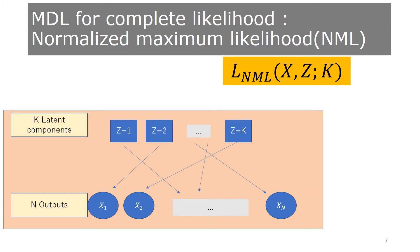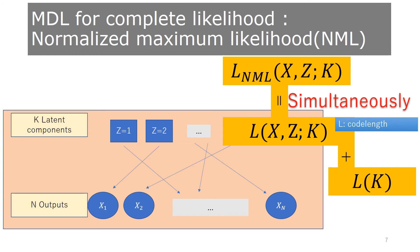Conventionally, normalized maximum likelihood coding, or NML, with latent variable completion, used to be the best approach on the basis of the minimum description length principle.